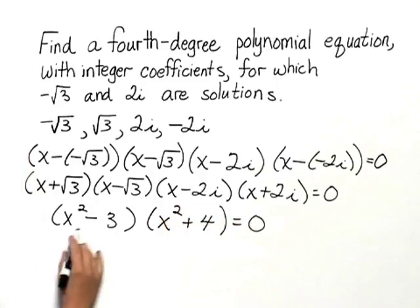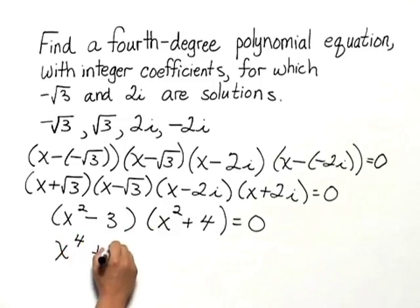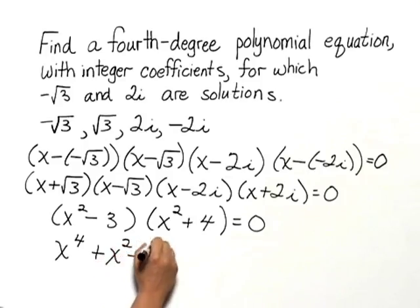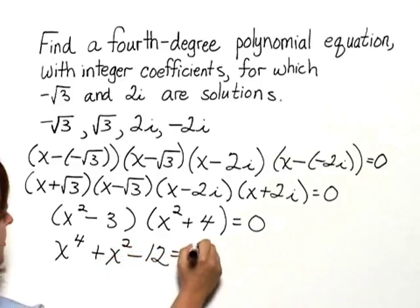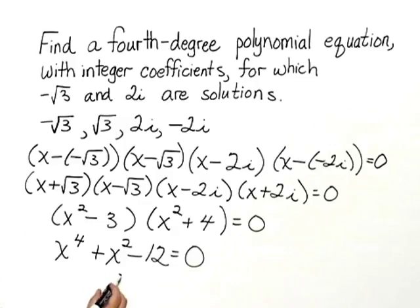And then when we multiply these two binomials, we get the trinomial x to the fourth plus x squared minus 12 equals 0. And this is a fourth degree polynomial with integer coefficients for which negative square root of 3 and 2i are solutions.